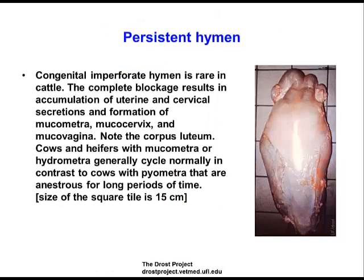Persistent hymens occur at the junction between the vestibule and the vagina. Normally that breaks down, but if it persists you can get fluid accumulating cranial to the hymen — the mucus accumulation can be quite thick and mucoid in nature. What differentiates these from pyometra is that in the case of pyometra the animals are often anestrus, but with persistent hymen the animals will cycle. Treatment involves breaking down the hymen and draining the accumulated fluid.